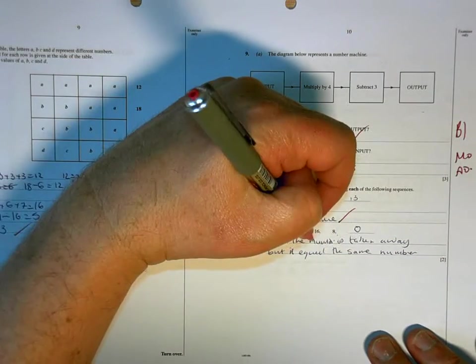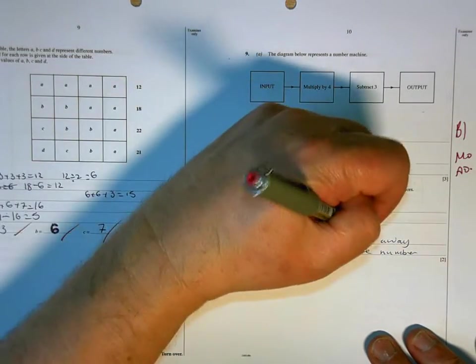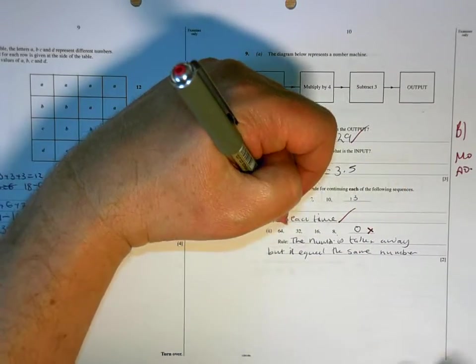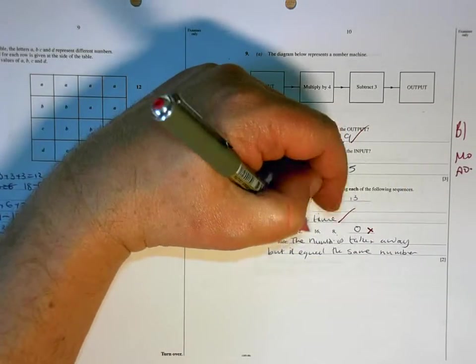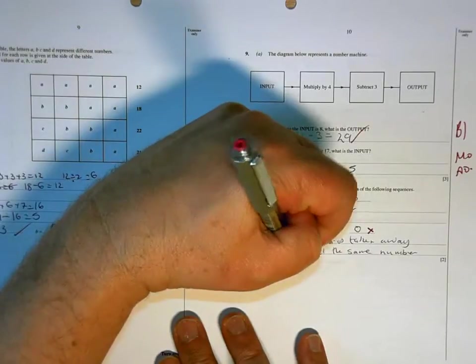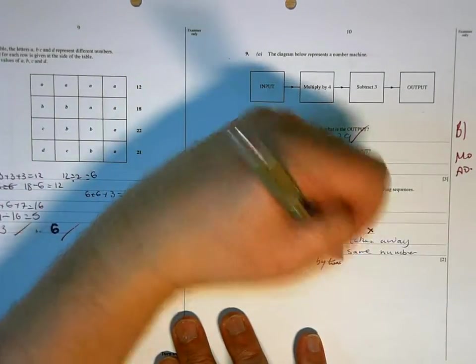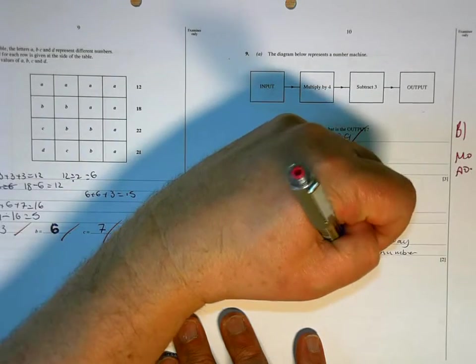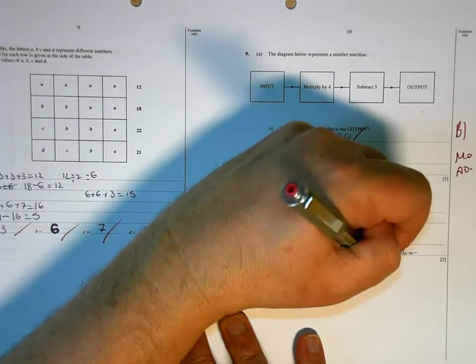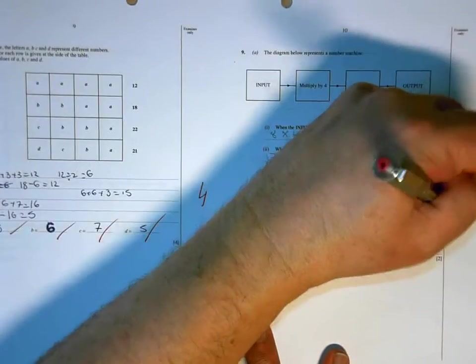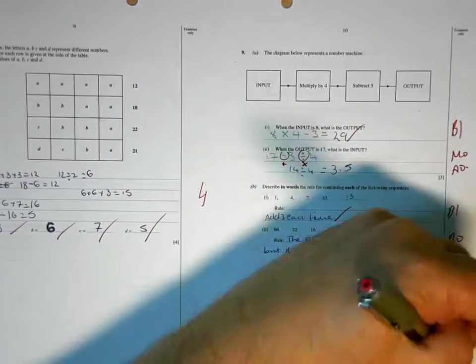Add 3 each time. The number is take away, but it equals the same number. So, no, what you're looking for there is that you're dividing by 2 each time. Total for the page, 6.